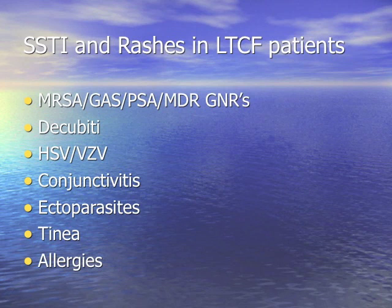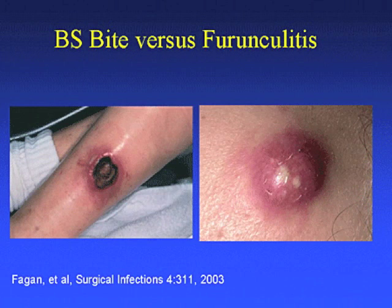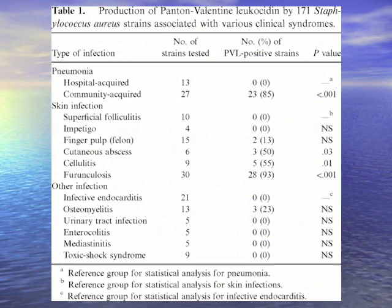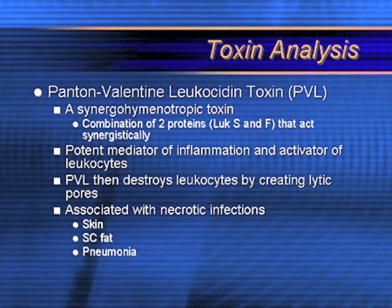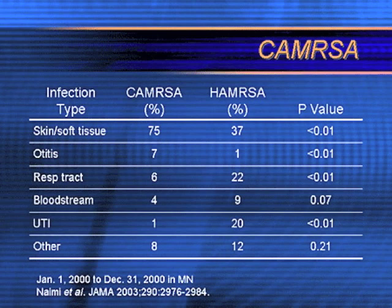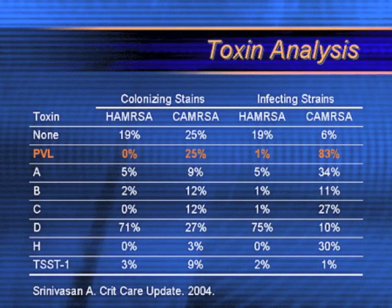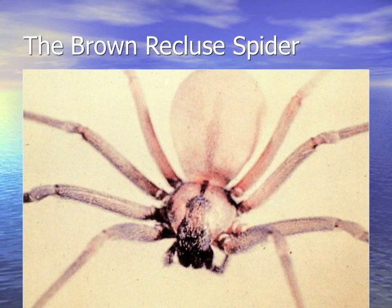For rashes and skin and soft tissue infections, the bugs include MRSA, Group A Strep, occasionally multi-drug-resistant gram-negative Pseudomonas in wounds, decubiti, herpes, varicella, conjunctivitis, ectoparasites, tinea, and allergies. Community-acquired MRSA presents as a black necrotic lesion often blamed on a spider bite, causing lung and skin infections, osteomyelitis, bacteremia, and cellulitis — PVL-positive strains carry high mortality. Treatment for milder cases is doxycycline or Bactrim; for serious infections, vancomycin, linezolid, or daptomycin.